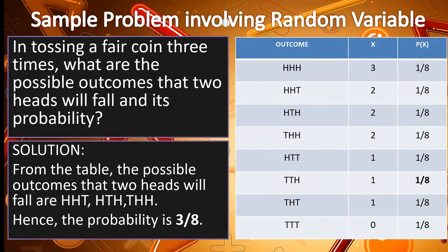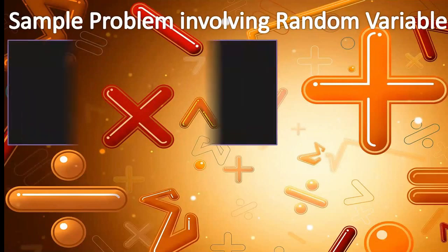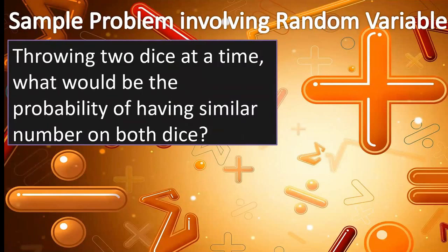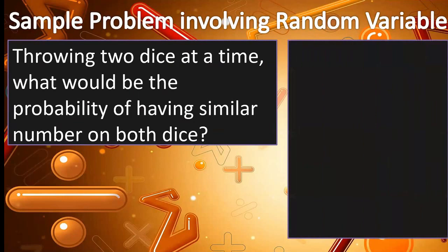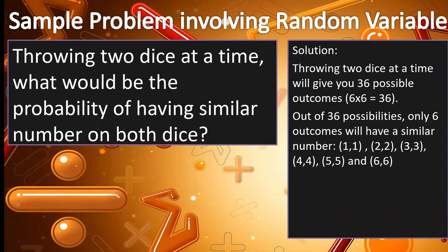Another example problem involving random variable is as follows. In throwing 2 dice at a time, what will be the probability of having a similar number on both dice? Since a dice has 6 possible outcomes, throwing 2 of it at the same time will give us 36 possible outcomes. Why does it become 36 possible outcomes? 6 possible outcomes from the first dice, multiplied by another 6 possible outcomes from the second, yields 36 possible outcomes.